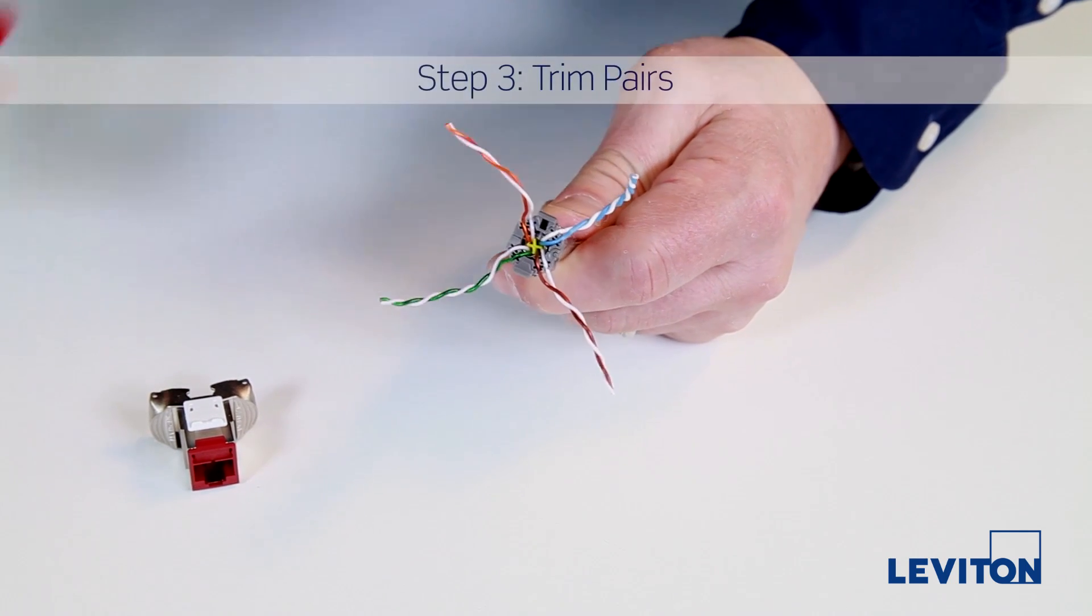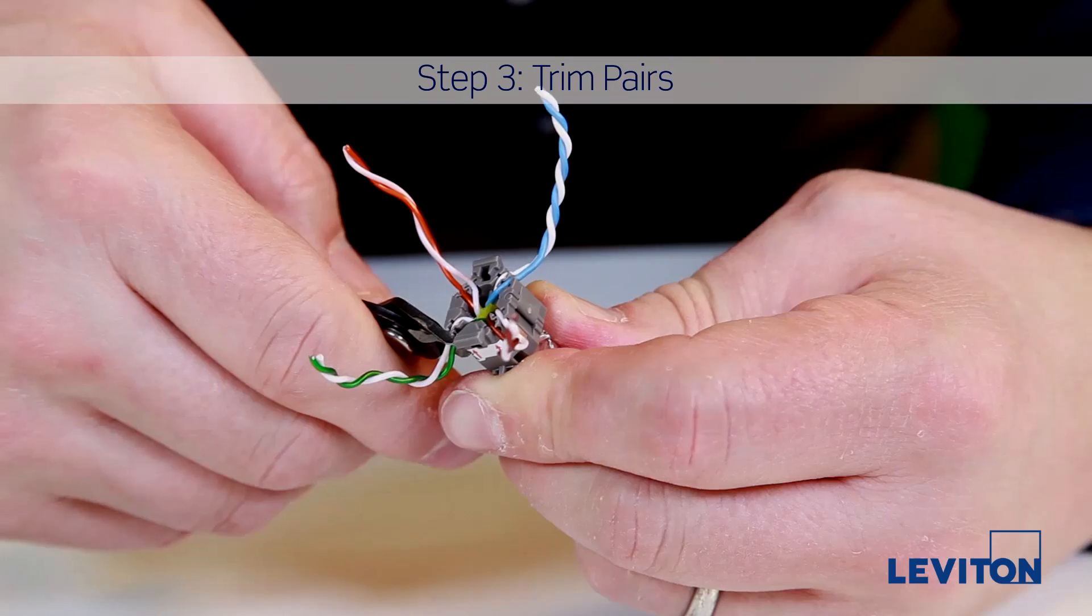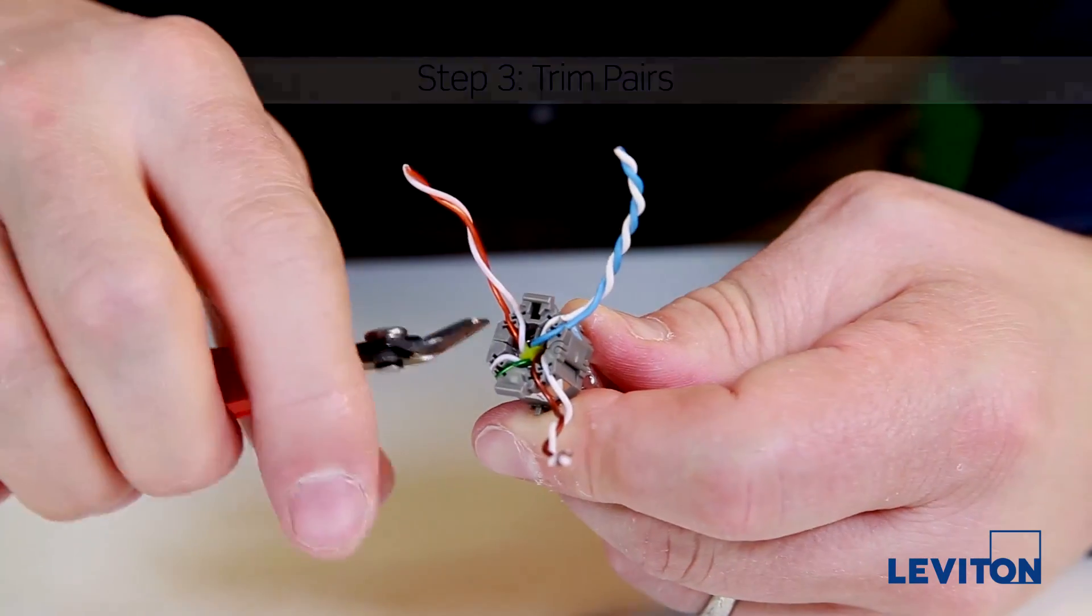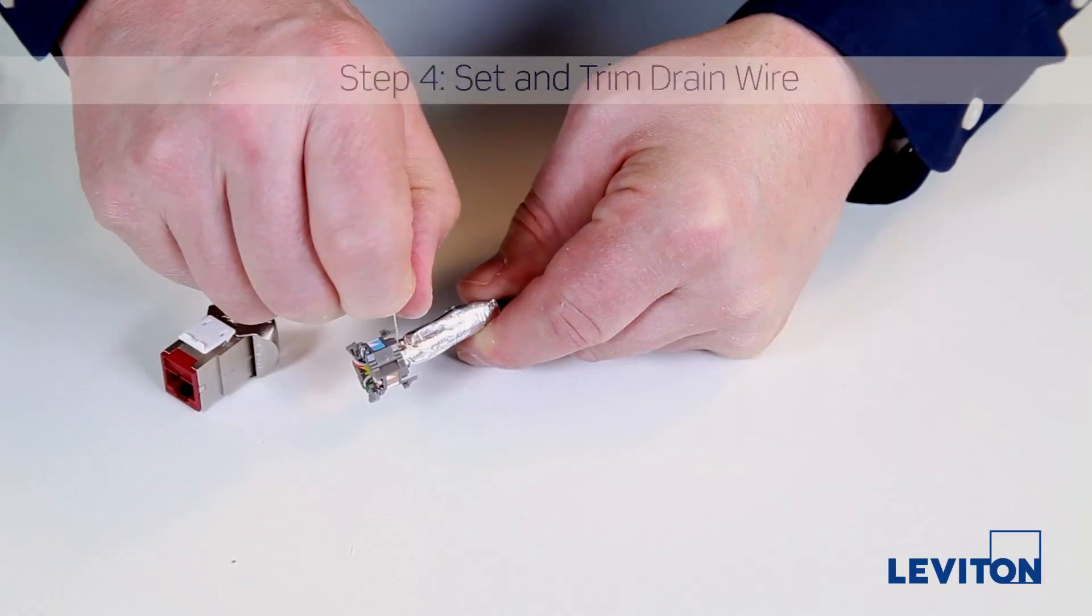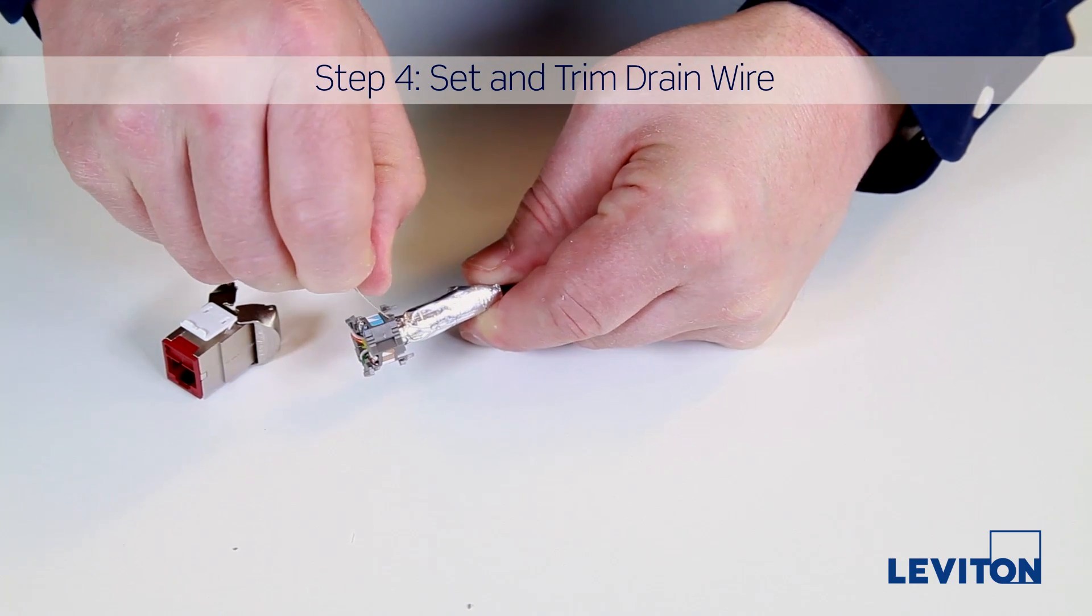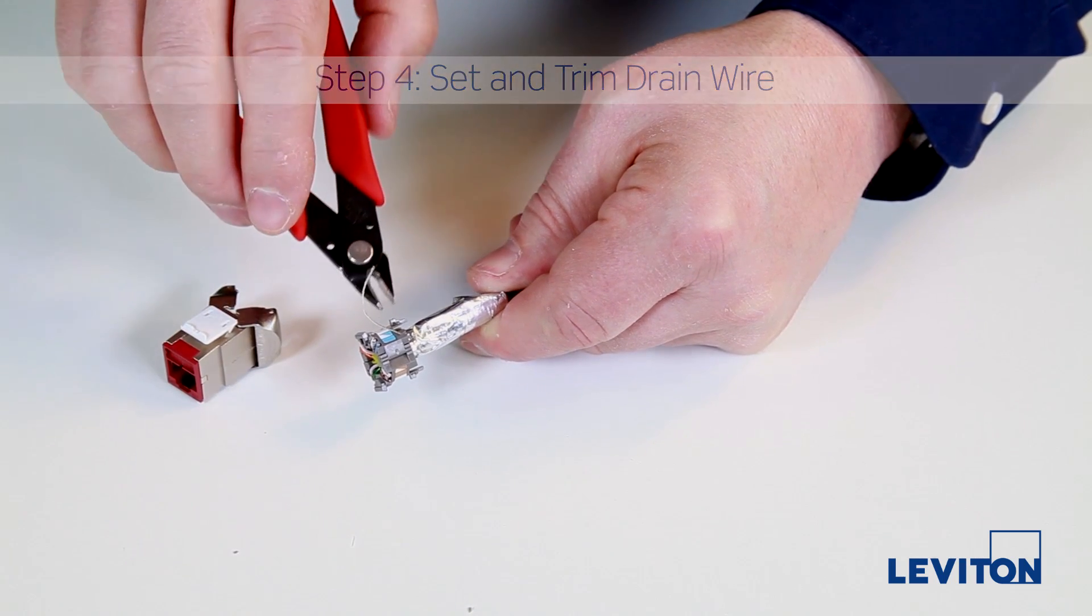Using flush cutters, trim all pairs so they are flush with the sides of the wire manager. Tug the drain wire into the triangular capture slot, and then cut it flush with the sides of the wire manager.